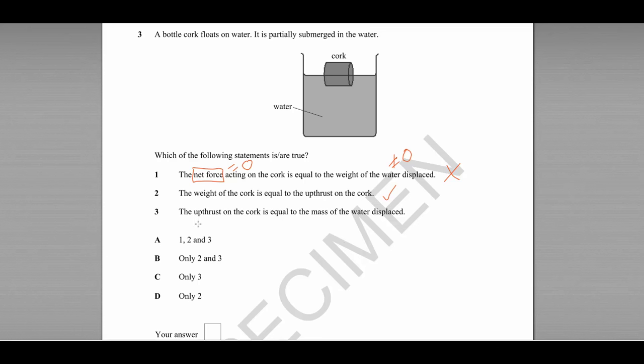Finally, statement number three: the upthrust on the cork is equal to the mass of the water displaced. That's a very similar statement to statement two, but you'll note that it is comparing an upthrust measured in newtons, that's a force, with a mass measured in kilograms.